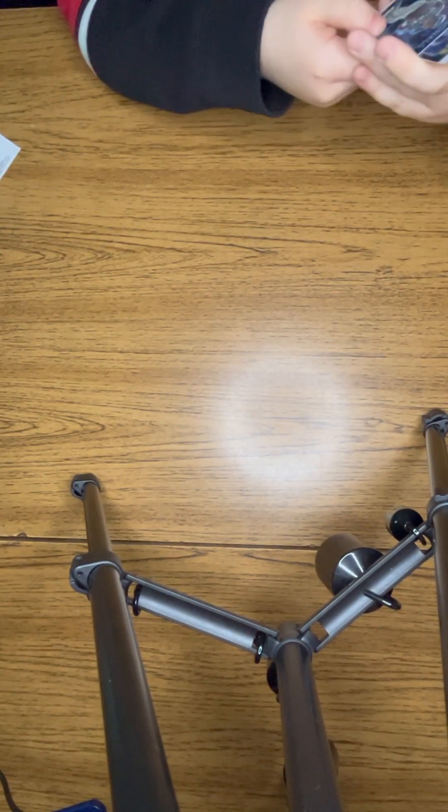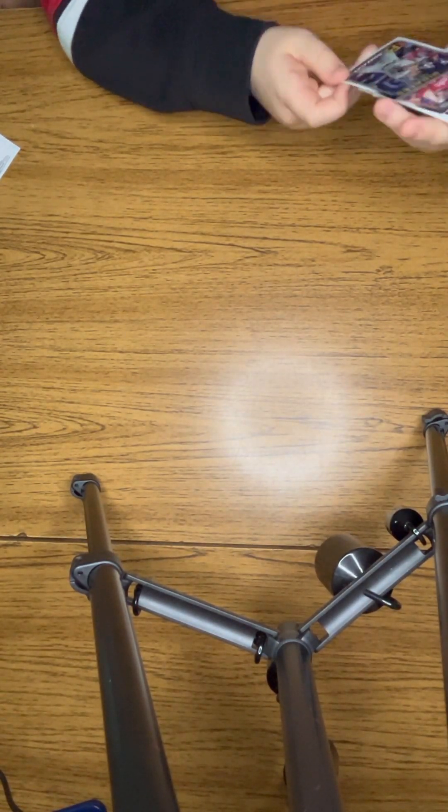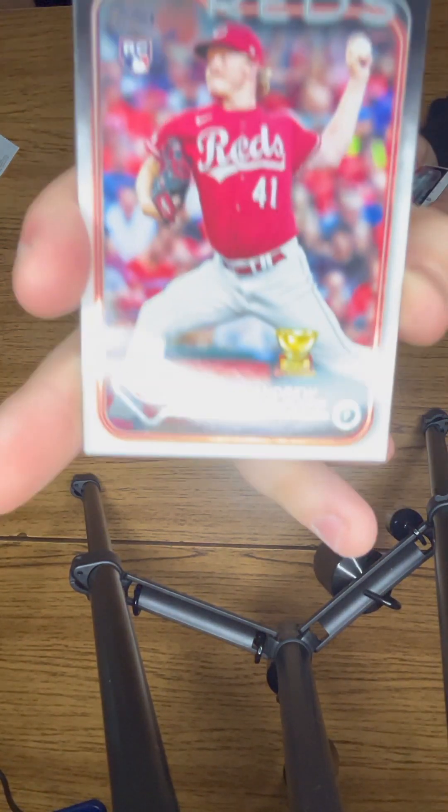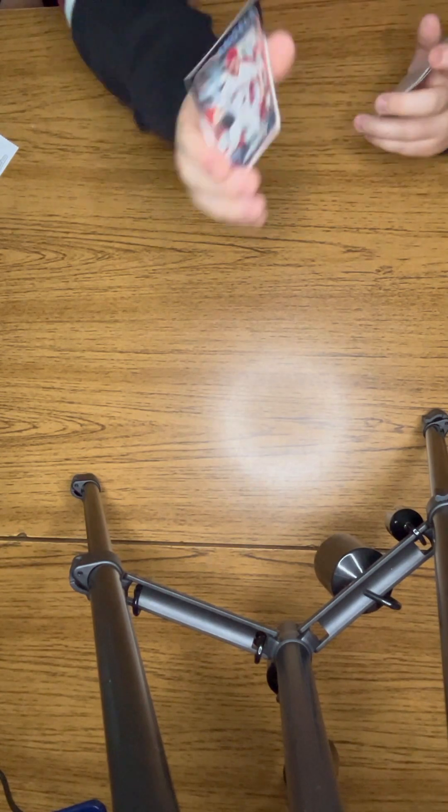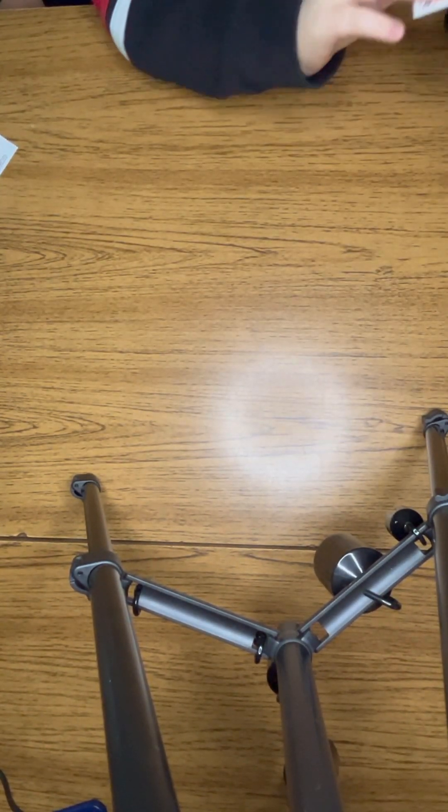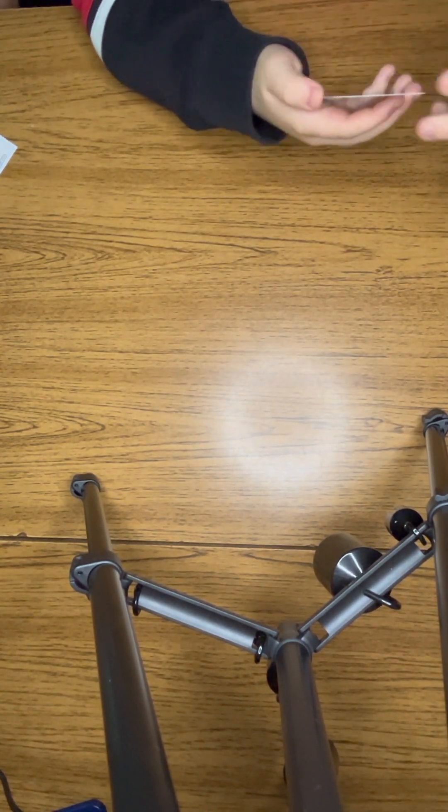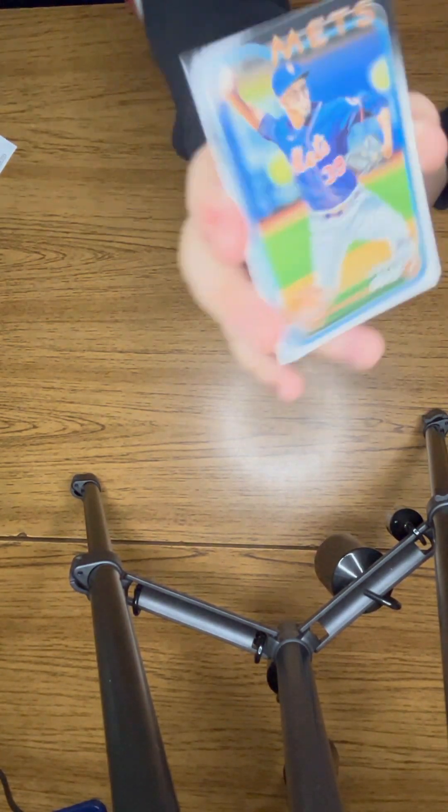A CJ Abrams Nationals, a rookie card of Nick Gonzalez, and an Andrew Abbott Topps All-Star rookie card, an Angels Tyler Anderson, a Marlins Jazz Chisholm Jr. rookie card, a Star of the MLB Bobby Witt Jr., and an Edwin Diaz card.